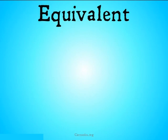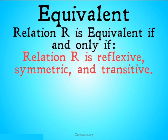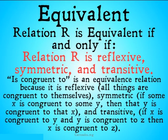Finally, equivalent. Equivalent is a fantastic property of relations that we're often looking for when we want a strong relation. An equivalent relation is going to be one that is reflexive, symmetric, and transitive. 'Is congruent to' is going to be an equivalent relation: it's reflexive because all things are congruent to themselves; it's symmetric because if X is congruent to Y, then Y is congruent to X; and it's transitive because if X is congruent to Y and Y is congruent to Z, then X is congruent to Z. Therefore it is an equivalent relation.